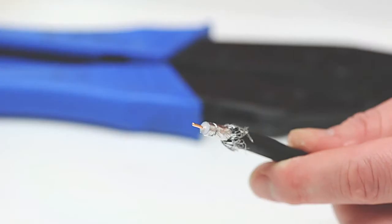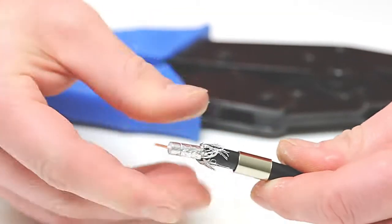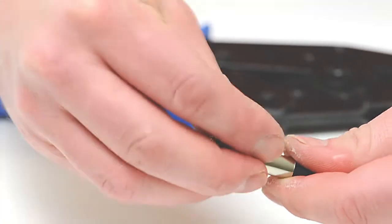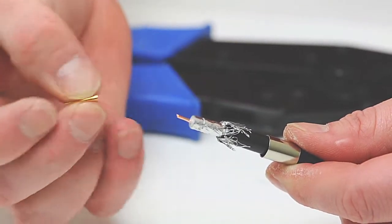Fold the braided shield on top of the jacket, slide the ferrule over the braid and the jacket. Insert the center pin of the center conductor.